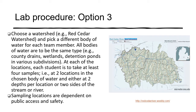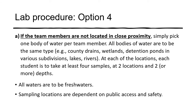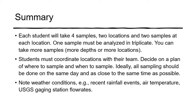Option four is for teams where members are not located in close proximity — simply pick one body of water per team member, preferably something relatively small. Don't pick a very large lake or very large river unless you have to. Each student takes four samples: two locations, two or more depths — or for a river or stream, you can sample both sides of the water body. All water bodies must be freshwater. In summary, each student takes four samples: two locations, two samples at each location.